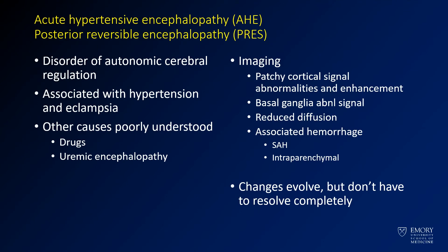In this case, what we're dealing with is a case of acute hypertensive encephalopathy, or PRES. What this is, is a disorder of vascular autoregulation abnormalities, so the patient's autoregulation gets disturbed. Certain things are associated with it, including hypertension and eclampsia.